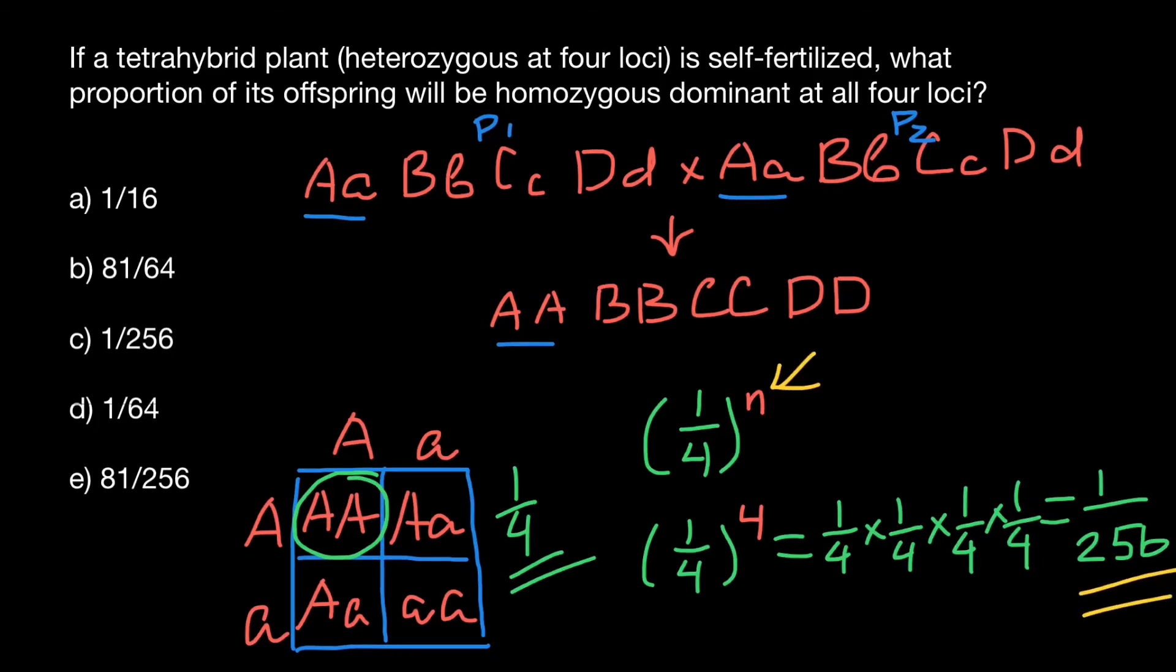One more time: if we cross two parents that are heterozygous for four loci, the probability that their progeny will be homozygous dominant for all four loci is one over 256.